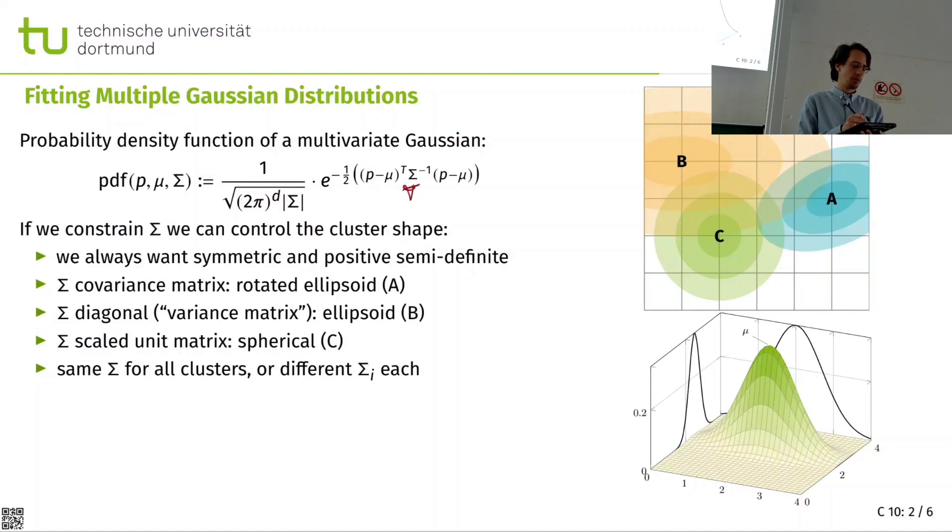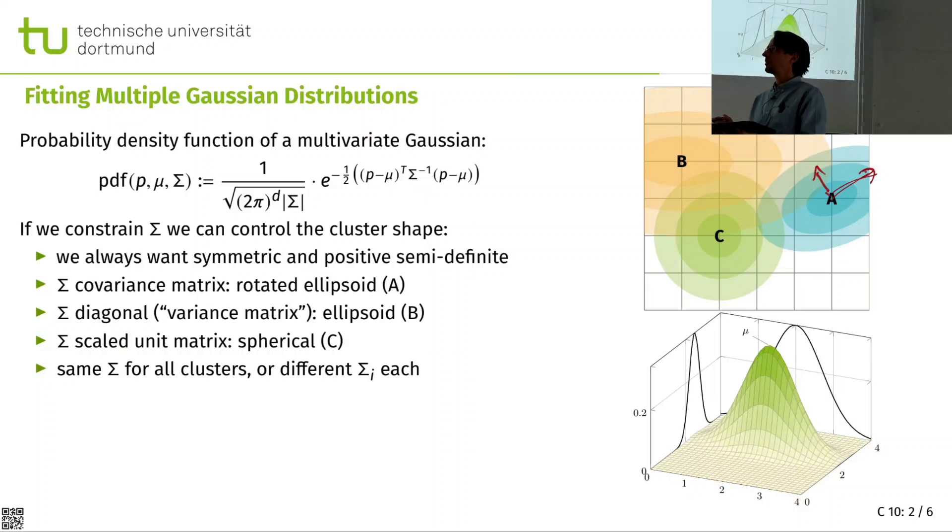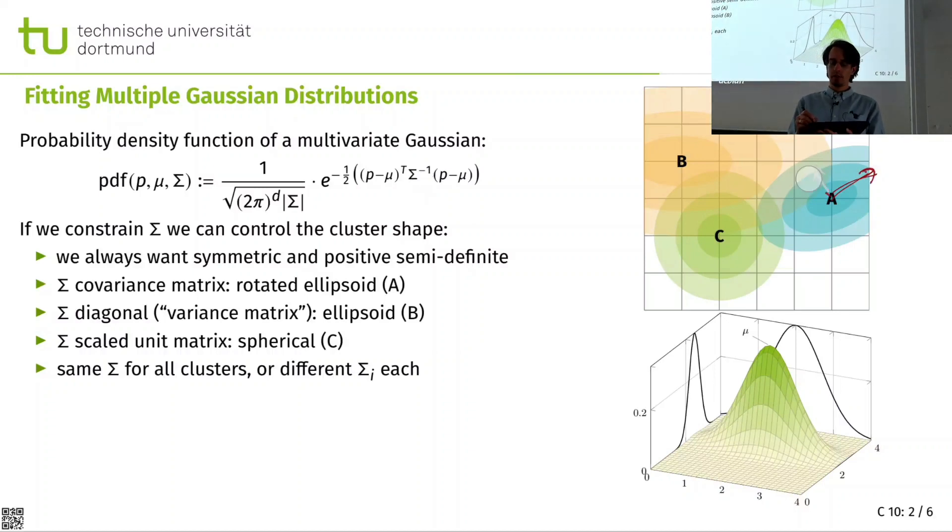So it's a proper probability distribution function. By this shape of the sigma, we can model the shape of the cluster. Similar to a standard Gaussian distribution in one dimension, we can increase the sigma to make the cluster larger or smaller, vary the size of the distribution. So that is the radius to some extent. Except that this is like a multivariate radius. It's not just going into one direction, but it can be different in different directions.